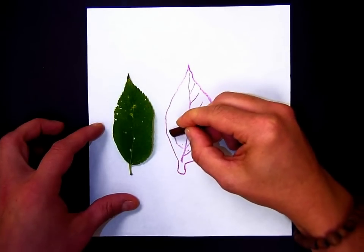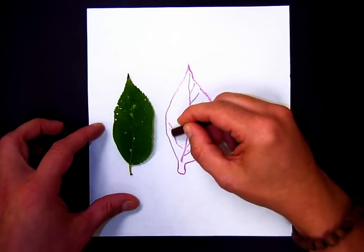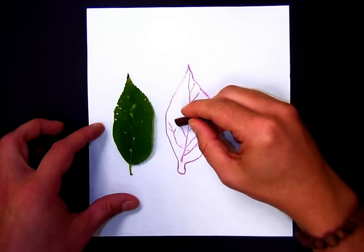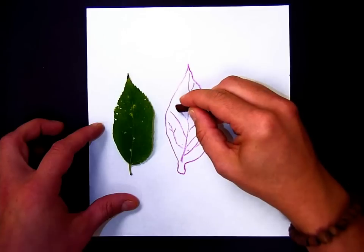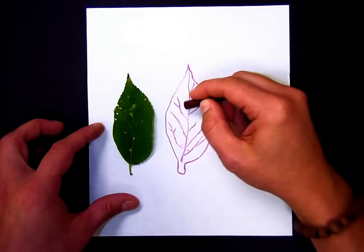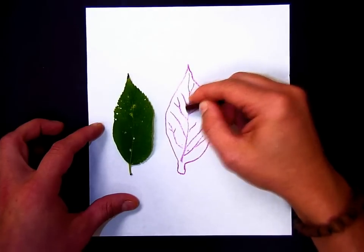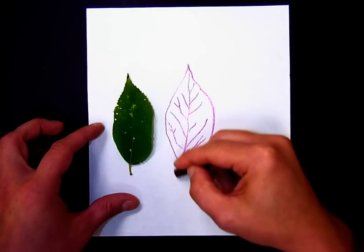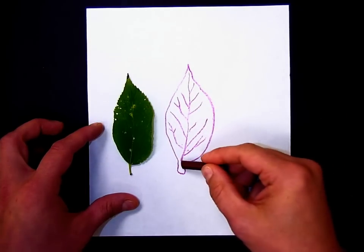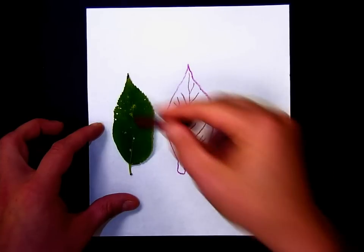Try and draw it accurately or exactly as you see it. Take your time on this. It's okay to go slow when you're drawing. So we have the outline or the shape of the leaf, and now we have the lines of the veins.